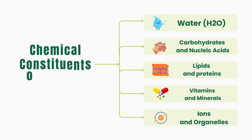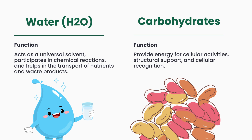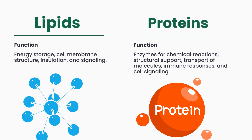There are several chemical constituents of the cell, like water, carbohydrates, nucleic acids, lipids, proteins, vitamins, minerals, ions, and organelles. Water acts as a universal solvent, participates in chemical reactions, and helps in the transport of nutrients and waste products. Carbohydrates provide energy for cellular activities, structural support, and cellular recognition. Lipids serve for energy storage, membrane structure, insulation, and signaling.